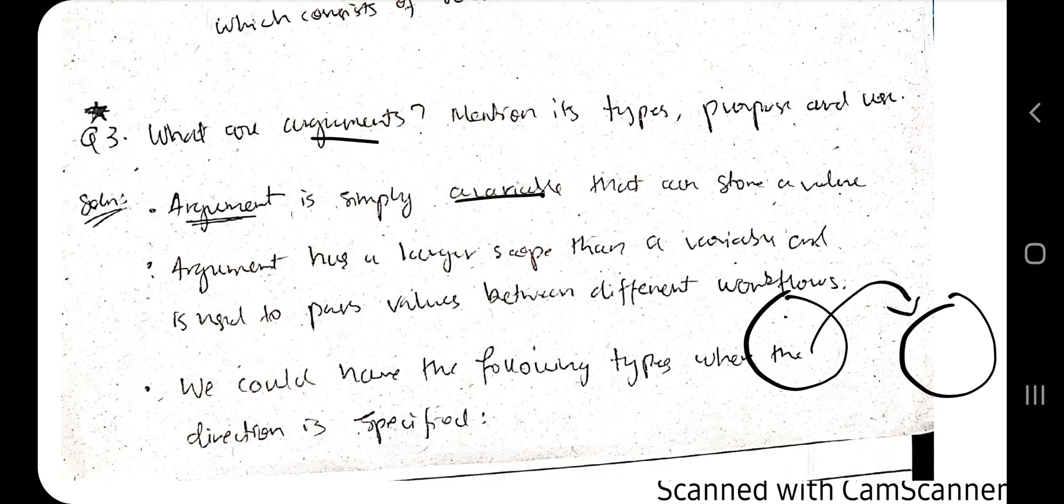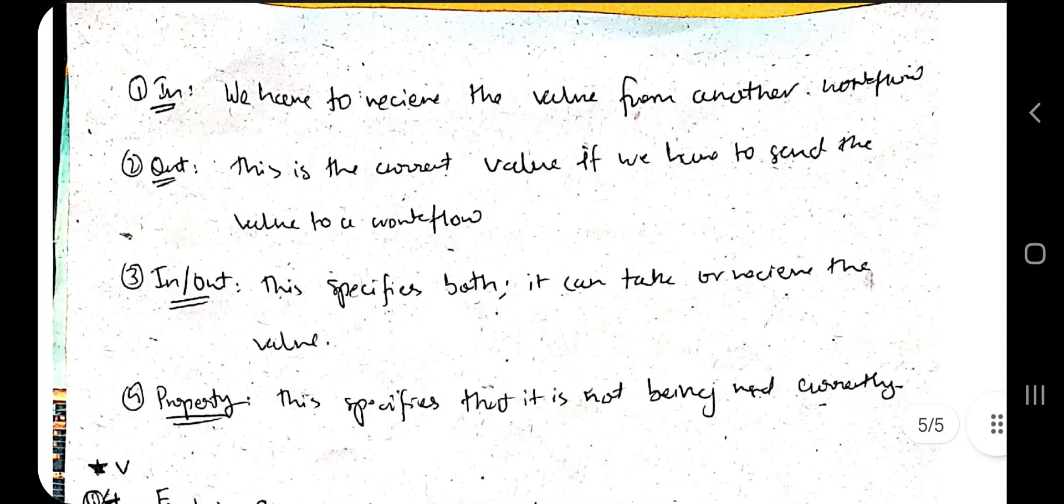If you declare the variables here, if you want to use those variables in another part of the program you can use arguments, or you can use it between different projects as well. There are four types of it: 'in' is used to just receive the value, 'out' is just used to output the value, 'in out' is used for both properties, you just use to specify the state of where we are currently at.